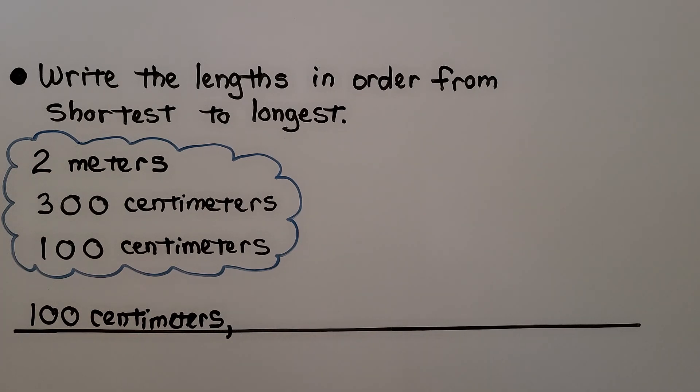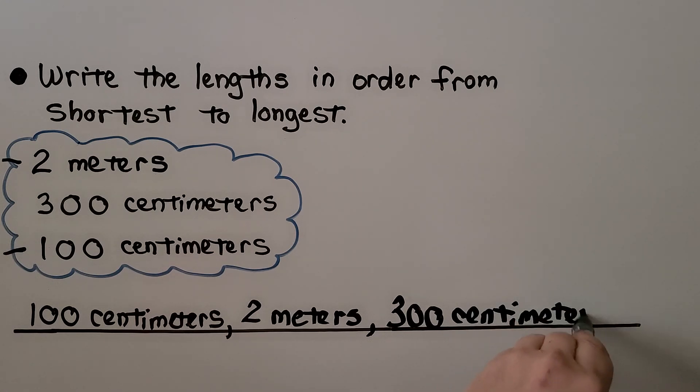And put a comma. So which one would be the next from shortest to longest? We used this one. If you said two meters, you're right. That would be 200 centimeters. We put a comma for the next one. And we used 100 centimeters and two meters. That leaves 300 centimeters. Now we put them in order from shortest to longest.